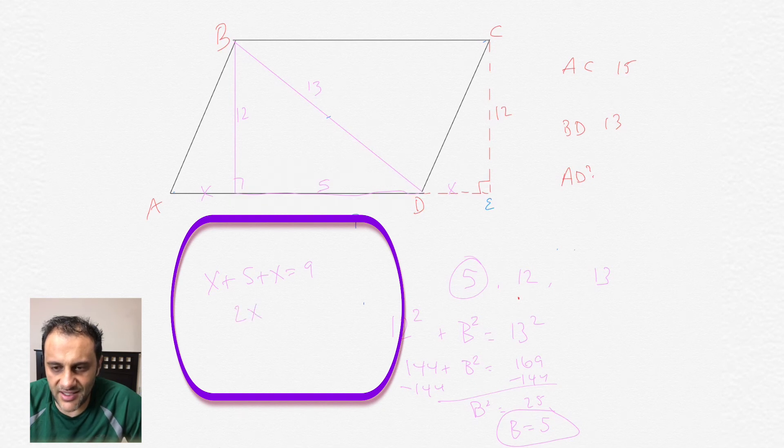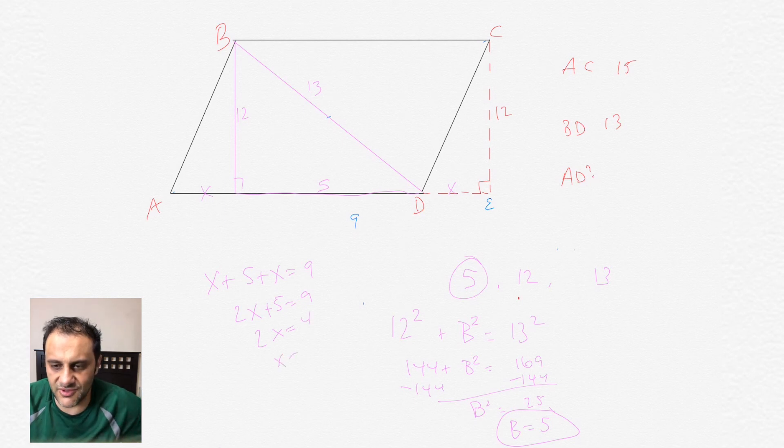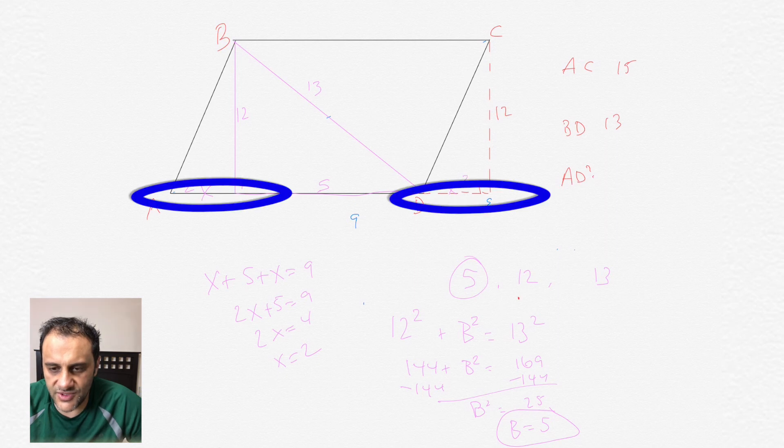So X plus 5 plus X equals 9. That works out to 2X plus 5 equals 9. And then we subtract 5 from each side, 2X equals 4, X equals 2. So those two corners there are 2 and 2.